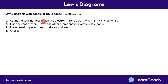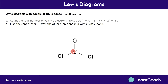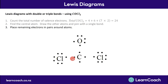Step one is done. For step two, carbon must be the central atom because it's the least complete — it's four away from a full shell of eight. Oxygen is two away, and chlorine is one away, so carbon is the most incomplete. We draw the other atoms connecting to the central carbon with single bonds, then place the remaining electrons in pairs around the atoms. This gives eight around each Cl, but only seven around the O and seven around the C.